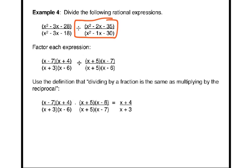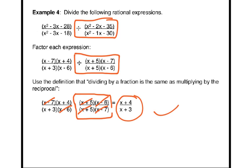So, now I want to divide by this expression. Well, again, the definition is that dividing by a fraction is the same as multiplying by the reciprocal. So, instead of dividing, I multiply and I flip that fraction so that I'm multiplying by the reciprocal. Now, I have many opportunities for canceling out binomials that are both in the numerator and in the denominator. And I'm left with simply x plus 4 over x plus 3.